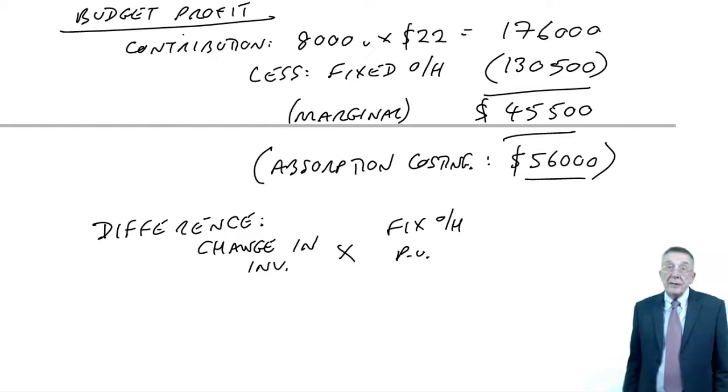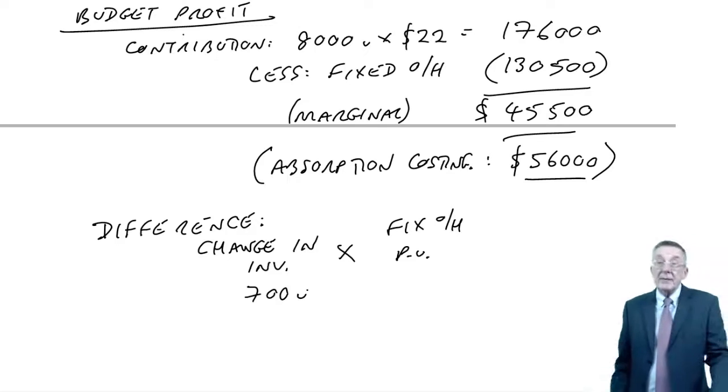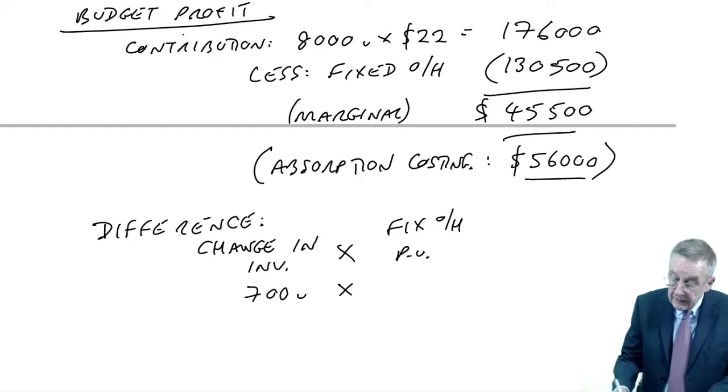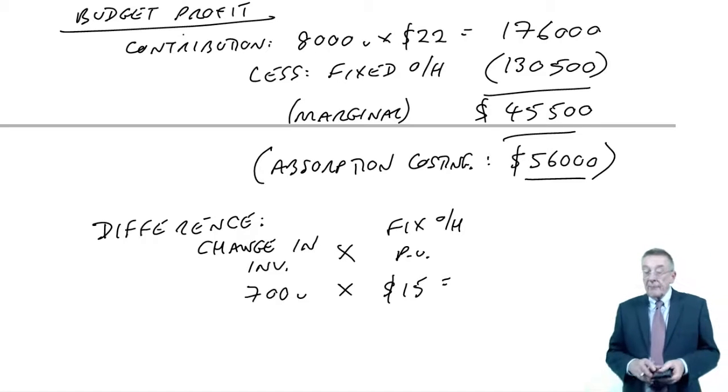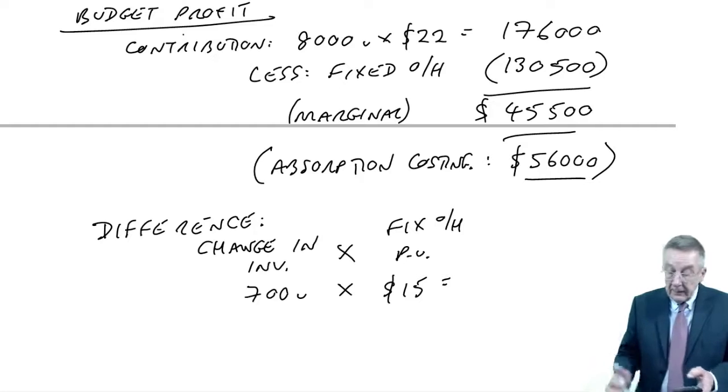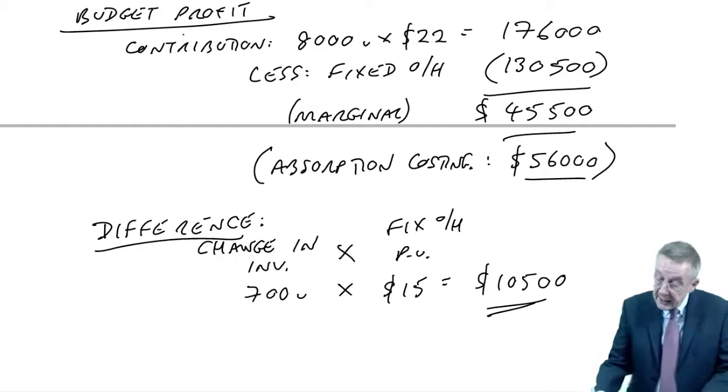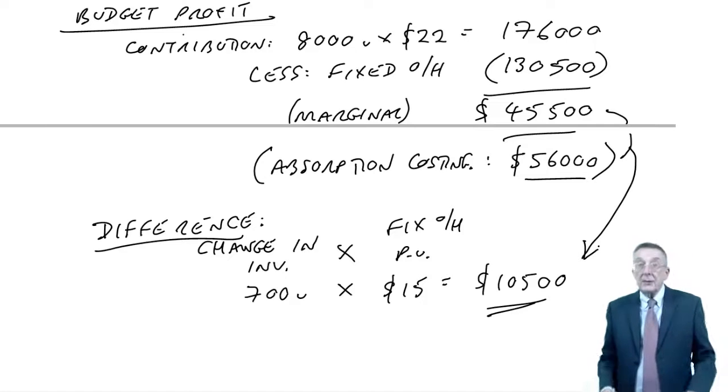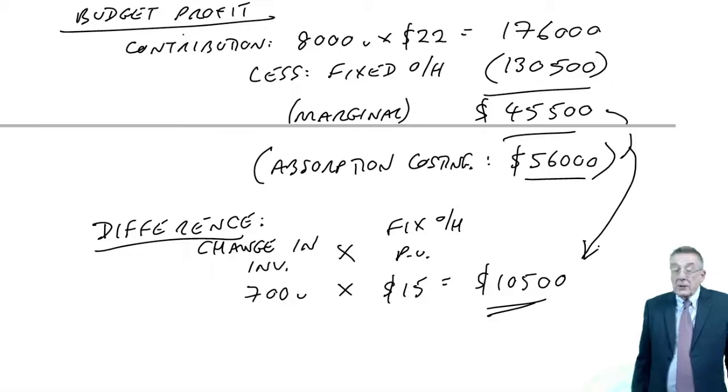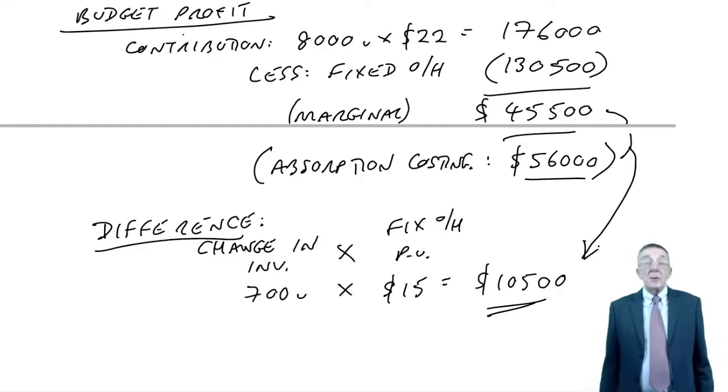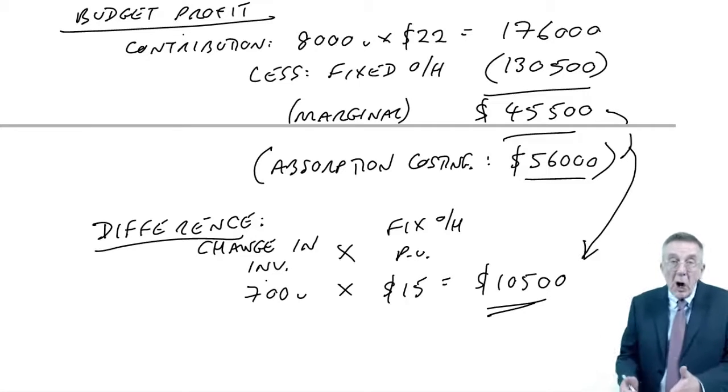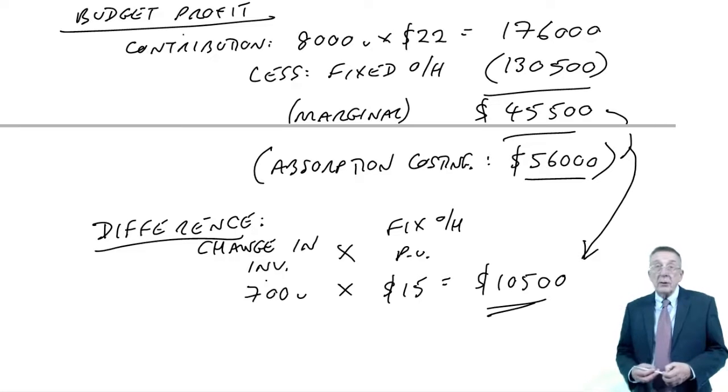We're looking at budget figures here. So how much was the inventory going to change by? In budget, we were going to produce 8,700 and sell 8,000. So the inventory would increase by 700. In absorption costing, the fixed overheads per unit were $15. And so 700 times 15 is 10,500. And is that the difference? Yes, it is. That's the difference between marginal and absorption profits. It's the only reason ever that they will be different. Absorption and marginal do give different profits. The only time they don't is if there's no change in inventory, then they will give the same profit. But otherwise they are different.